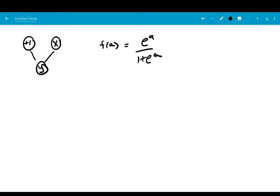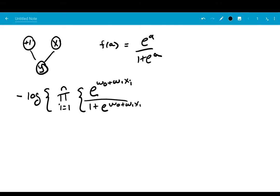We talked about cross entropy as our loss function that we were going to minimize, and that worked out to be something like negative log, in this case we can put it all together, where it was the product i equals 1 to n, e to the w naught plus w1 times xi over 1 plus e to the w naught plus w1 xi.